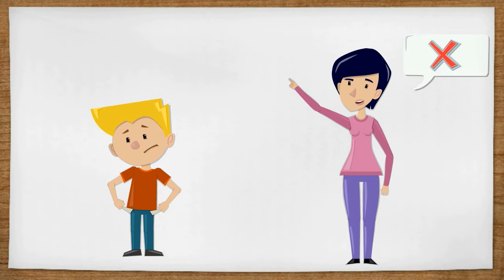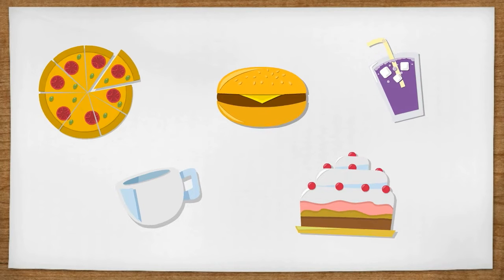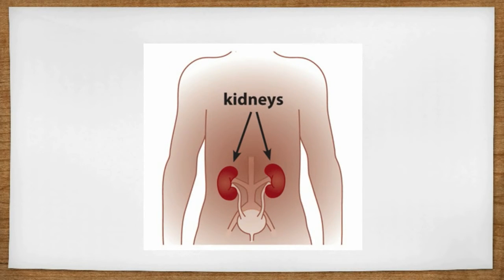We can't drink salt water. Why not? What would happen if we did drink it? Well, the salt in our food and drinks ends up in our blood, but we can't have too much salt in our blood. Our kidneys use water to flush out the extra salt, generating urine that exits the body. This is one of the reasons we need to drink water.